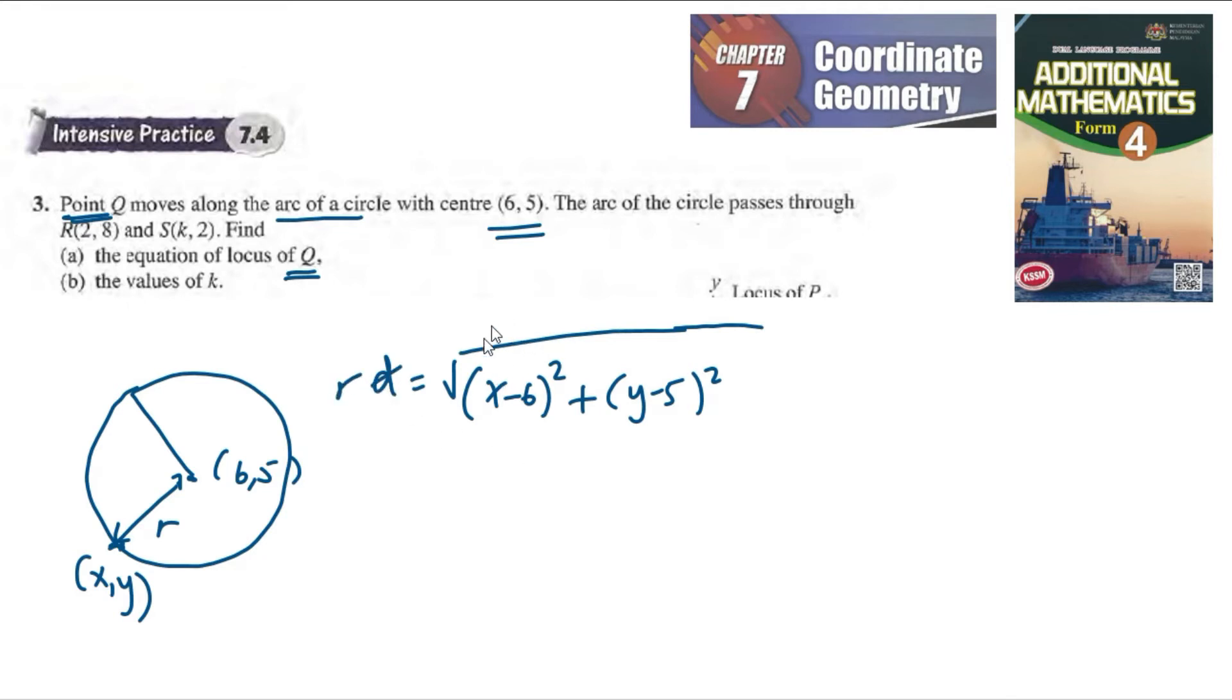If you want to remove the root, then we bring it to the left. We get R² is equal to (x-6)² plus (y-5)².